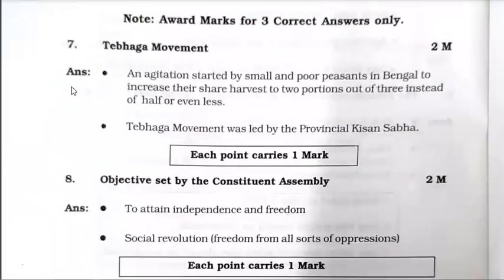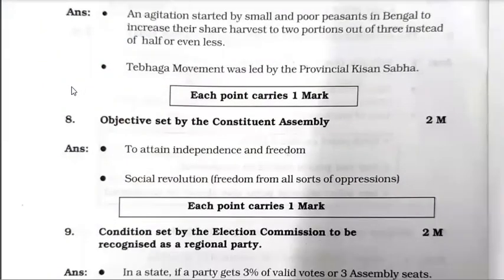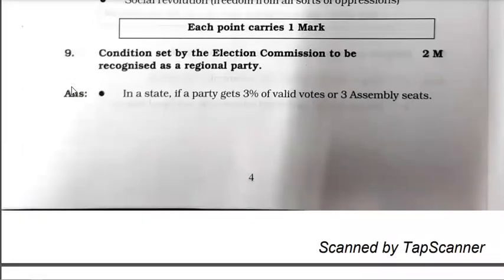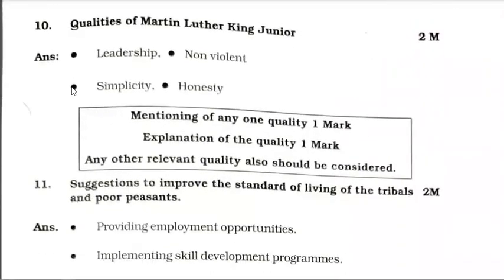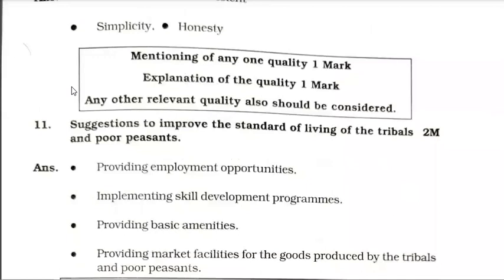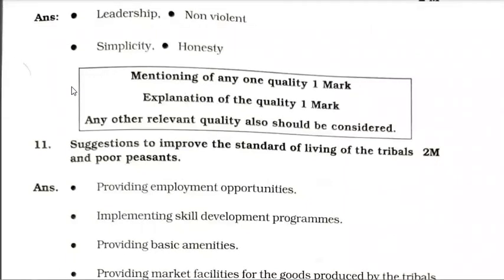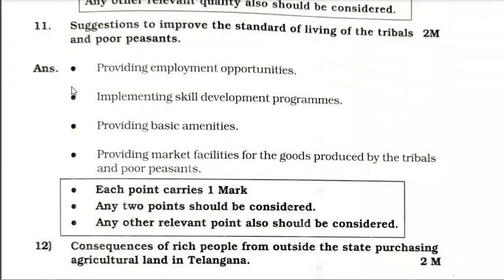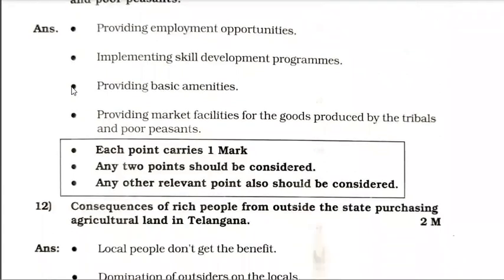This is Group B. Here no explanation is needed — each point carries 1 mark, as clearly shown. For the quality of Martin Luther King Jr., mentioning any one quality is 1 mark and explanation of that quality is 1 mark. For question 11 also, each point carries 1 mark.